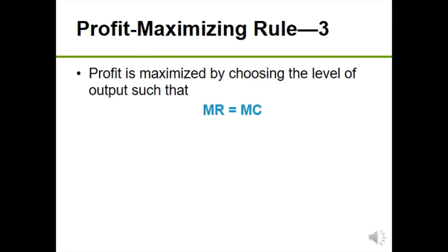Profit is maximized when output is such that marginal revenue equals marginal cost, meaning marginal profit equals zero. Here I'm using the Greek letter PI for profit. We want to know what the firm should do given different relationships between marginal revenue and marginal cost.